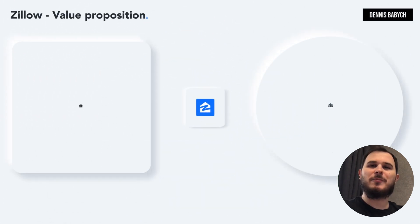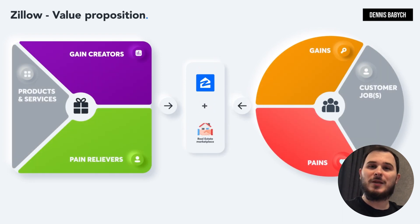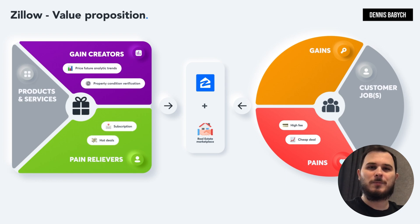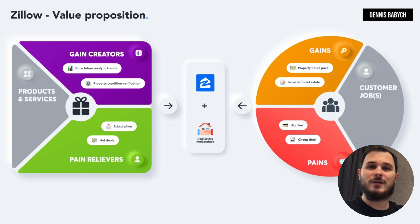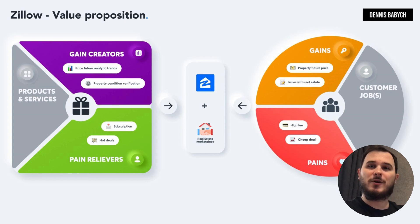To build a successful startup, achieving product-market fit is essential. This means coming up with innovative ideas and providing disruptive solutions for your target audience. Completing a value proposition table is a critical step in this process. Your unique idea is crucial in addressing the concerns and opportunities that your potential customers seek. It's important to identify their pain points and desired benefits and provide solutions accordingly.